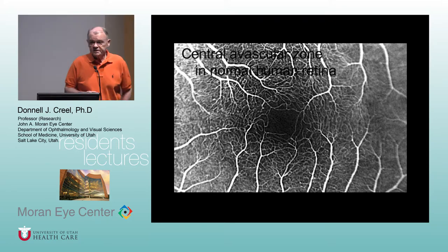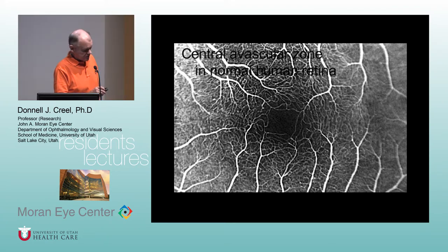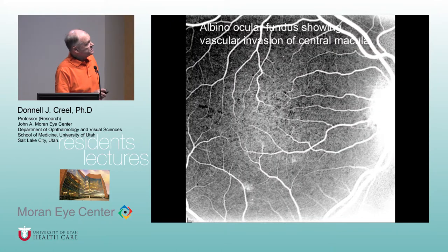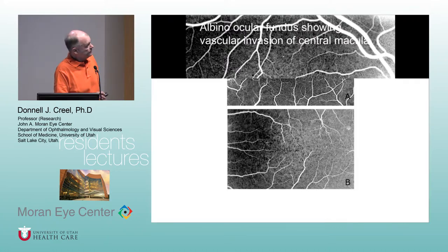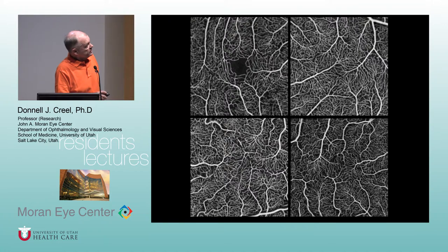Another big difference is that albinos have invasion of the avascular zone. Our avascular zones look normal, but in albinos there's a lack of an avascular zone, as shown here. Here's a comparison — a normal and three others — these are from a program in Milwaukee.